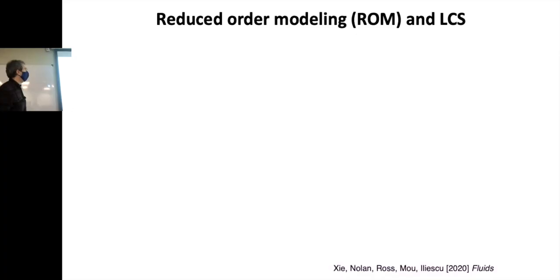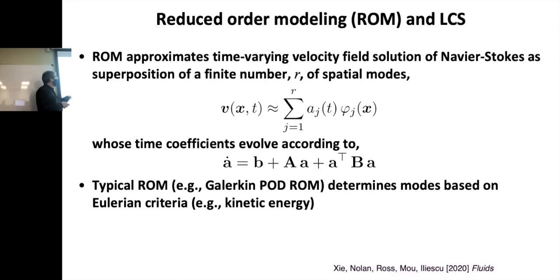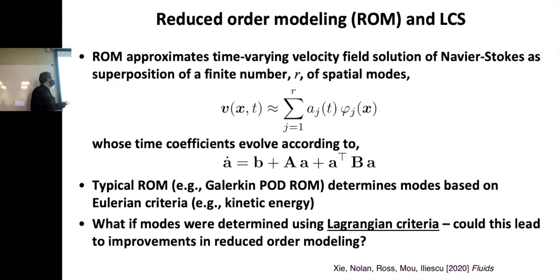So I'll say a little bit about reduced-order modeling. Tryon Ilyescu is a mathematician who works on reduced-order modeling, and he and I got to talking about, hey, maybe LCS could help improve it. One of the typical ways that you do reduced-order modeling is you decompose the velocity field into time-varying coefficients and then fix spatial modes. And then you could calculate how do those spatial modes change in time. The typical ROM uses a Galerkin POD, and it's based on Eulerian criteria, so streamlines. Kinetic energy. We thought, well, what if modes were determined using some of the Lagrangian criteria? Could this lead to any improvement? Could we, say, for the same level of accuracy, get away with fewer modes?